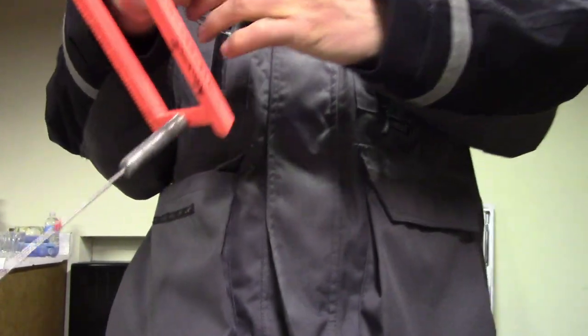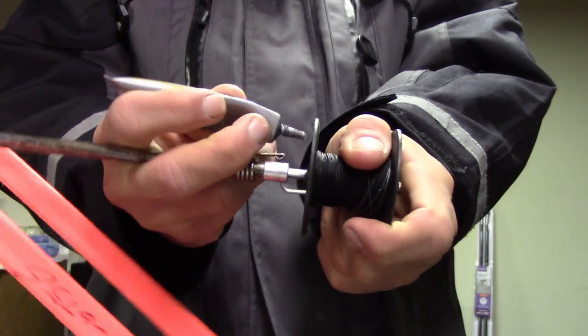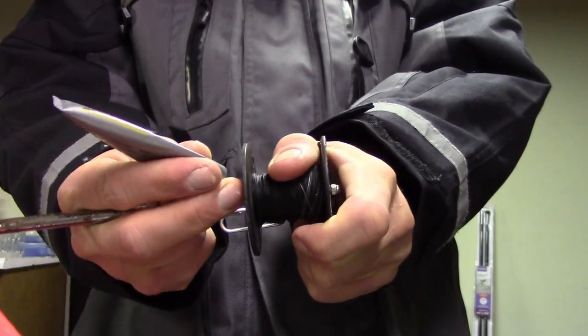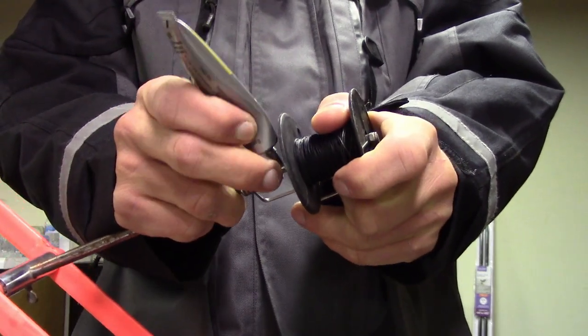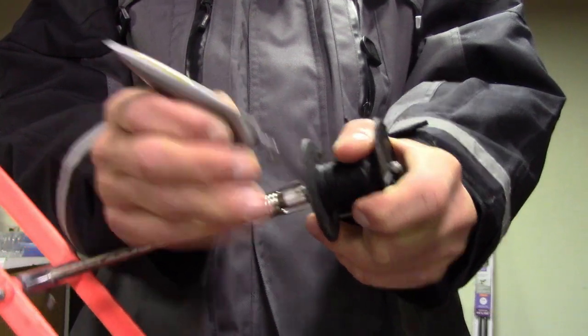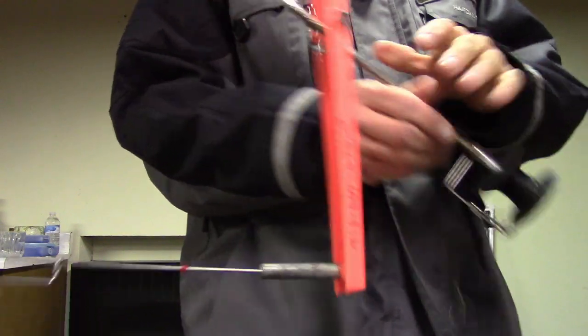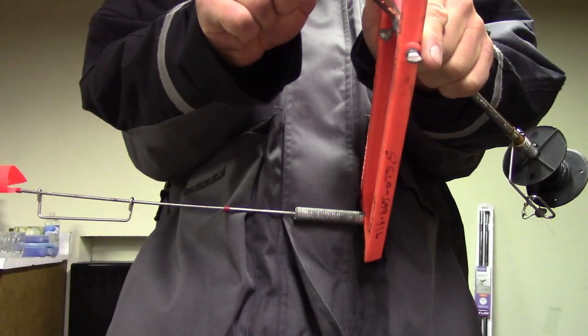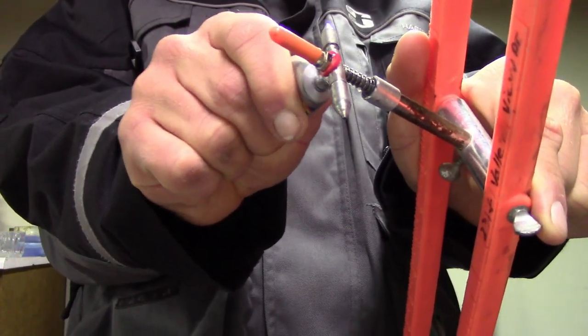So we're going to take some grease, apply it to right here. This bar right here underneath. Put a good glob on there. All right. Got that end greased up. Now we're going to want to put a good glob on the top here.